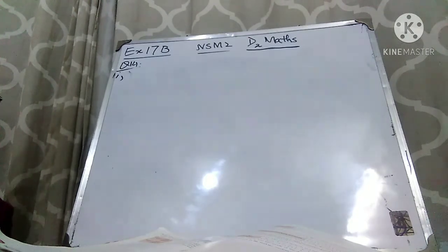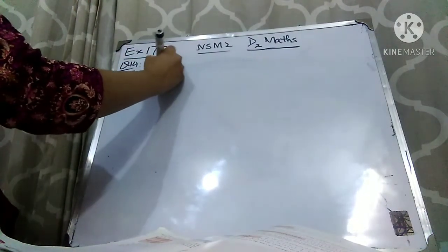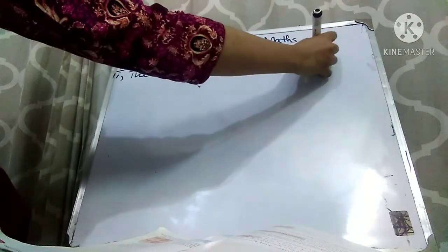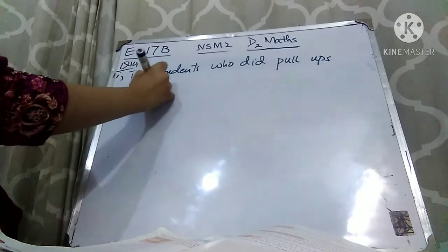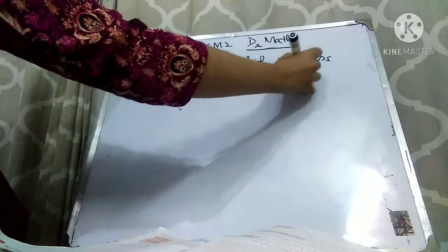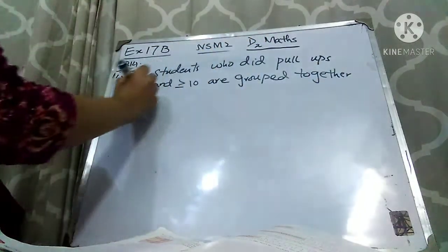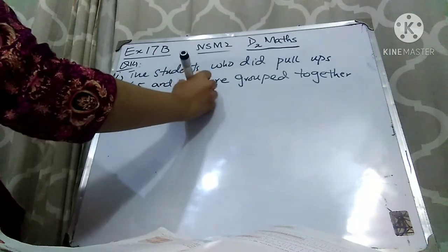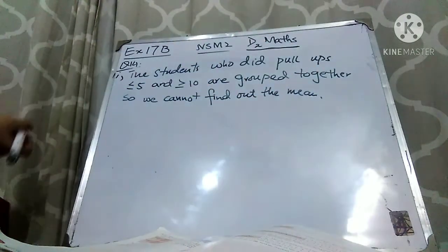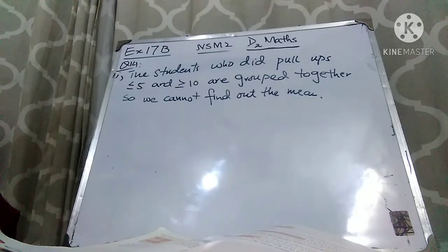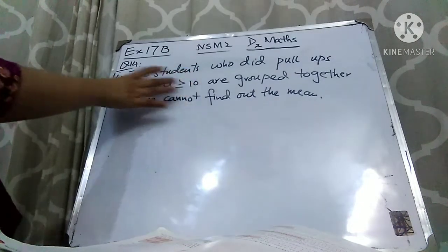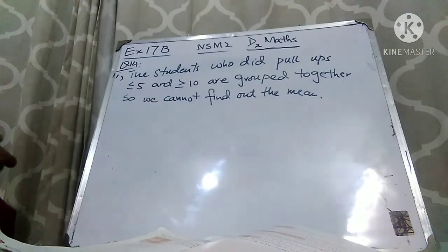The answer for part 1 is: the students who did pull-ups less than or equal to 5 and greater than or equal to 10 are grouped together — we cannot determine their exact values. Therefore, we cannot find out the mean, because to find the mean we need proper individual data.